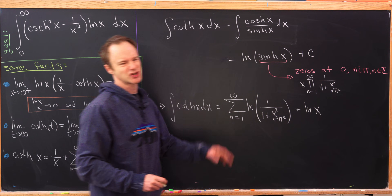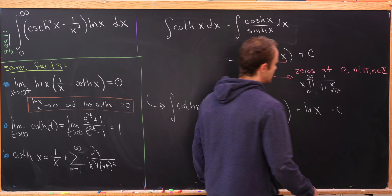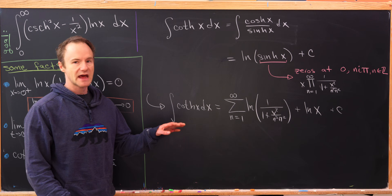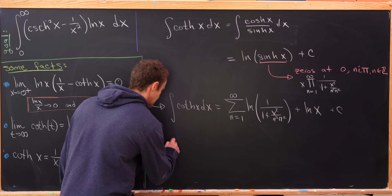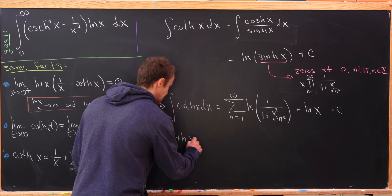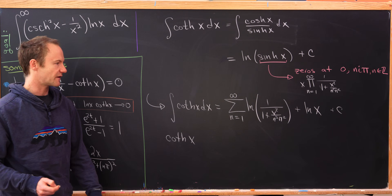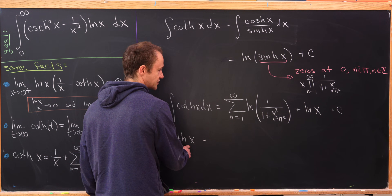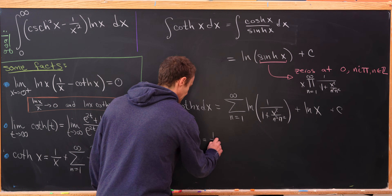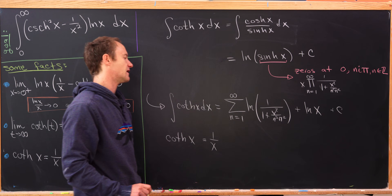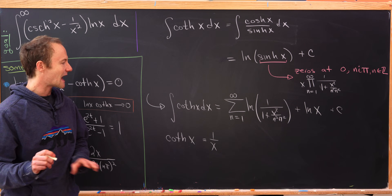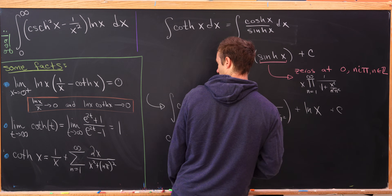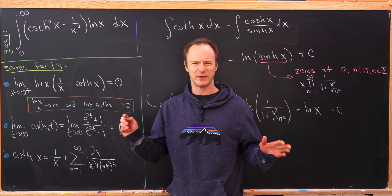We can see that the constant is zero from initial conditions. Taking derivatives of both sides gives us the hyperbolic cotangent on the left-hand side. The derivative of natural log of x is 1 over x, and then the derivative of the other terms, being careful with the chain rule, gives us exactly the series expansion. So we don't even need to know the constant equals zero since we're differentiating.